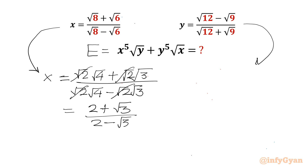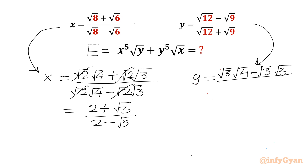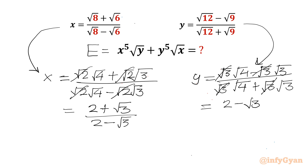Now the turn of y. I can write root 12 as root 3 times root 4, and root 9 we can factor as root 3 times root 3. So y equals root 3 times root 4 minus root 3 times root 3 over root 3 times root 4 plus root 3 times root 3. Now we will take root 3 common from numerator as well as denominator, so it will be cancelled out. Simplified form: root 4 is 2, so y is 2 minus root 3 over 2 plus root 3.